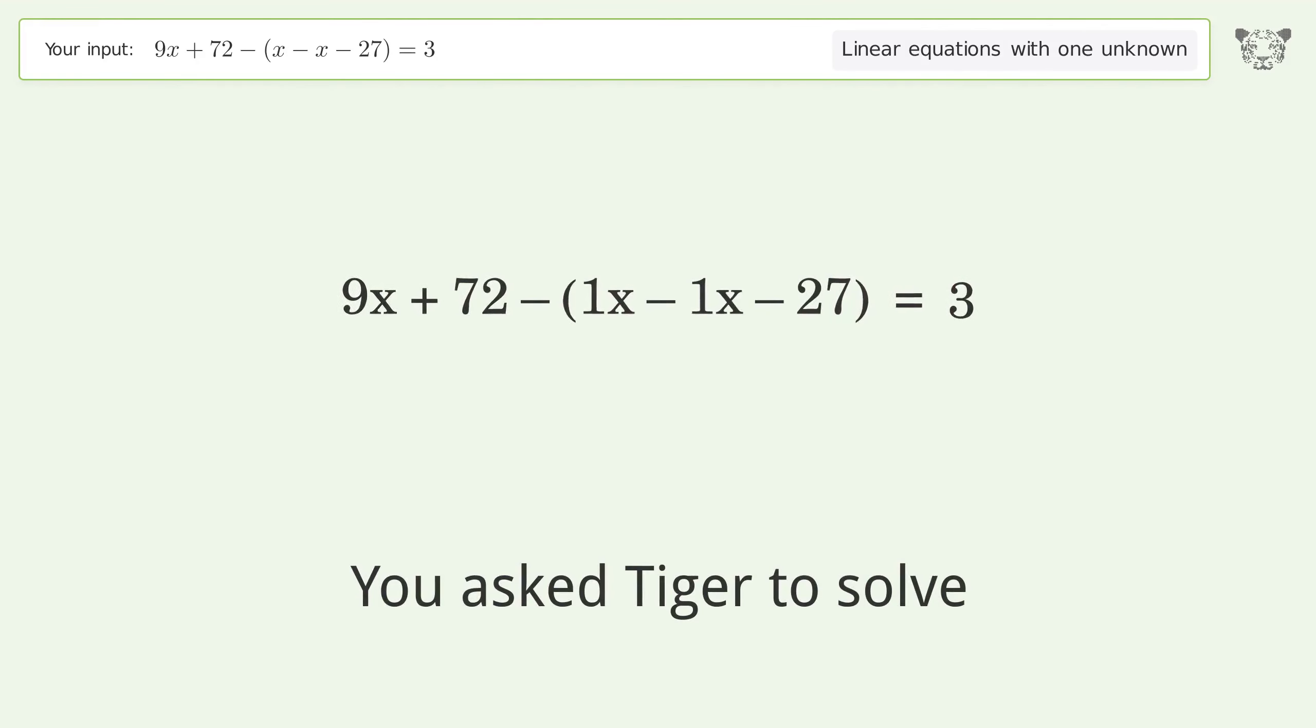You asked Tiger to solve this. This deals with linear equations with one unknown. The final result is x equals negative 32 over 3.